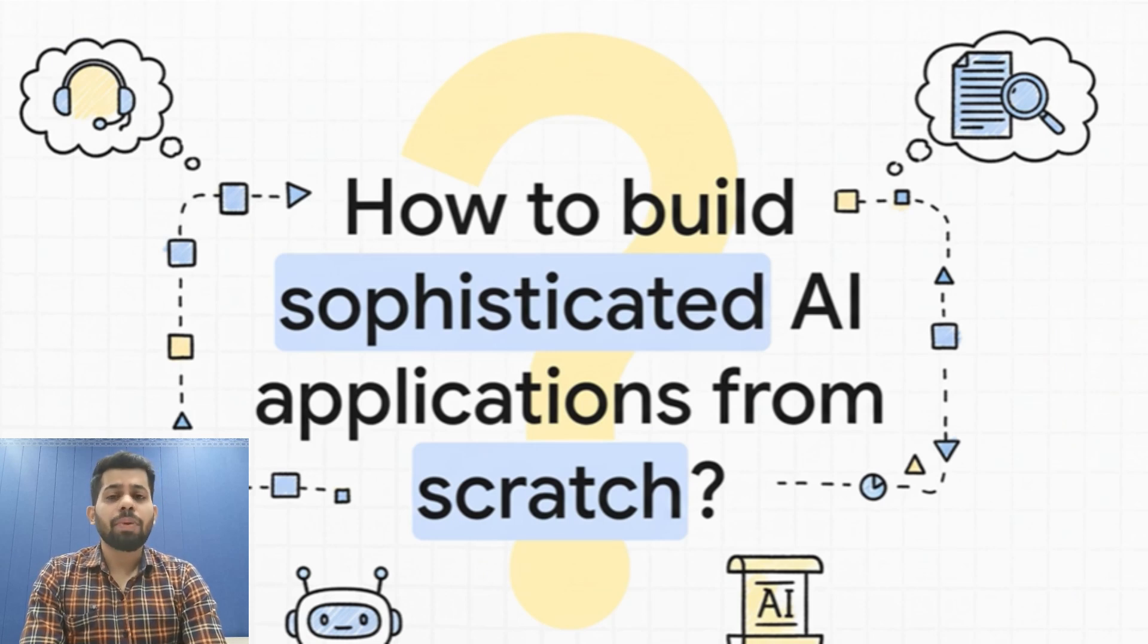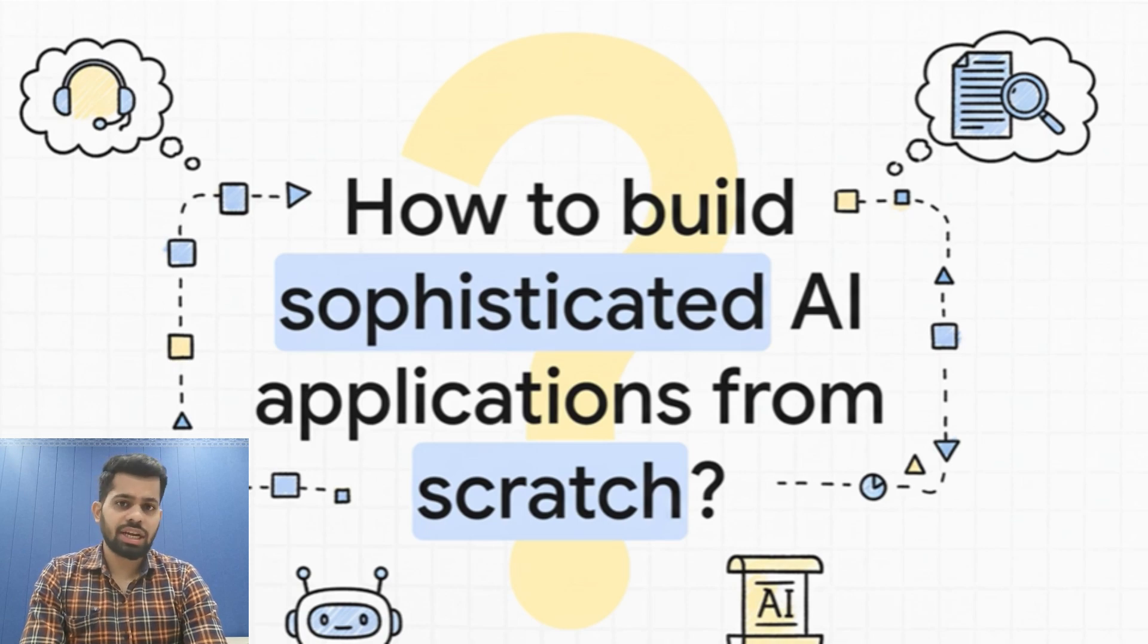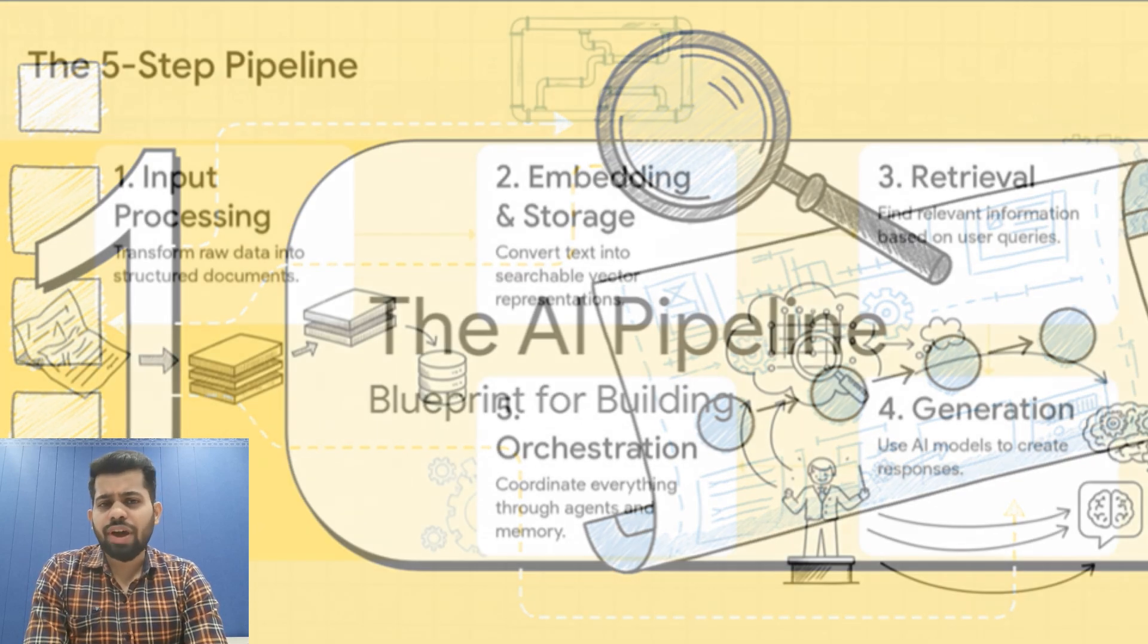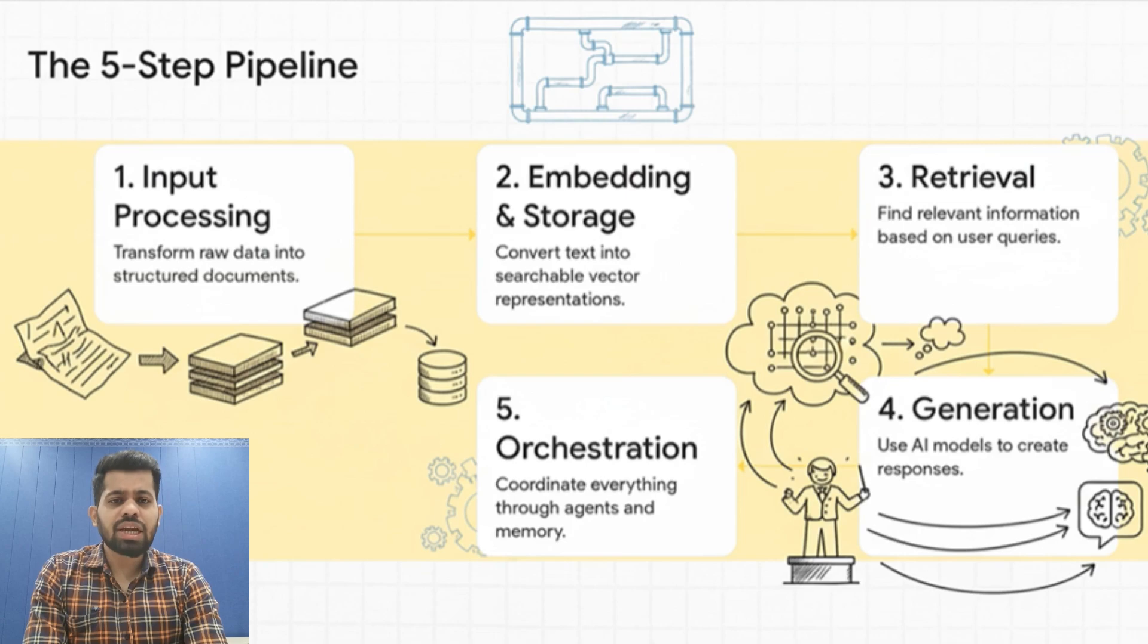LangChain is the industry standard for building production-ready LLM applications, and its power lies in how its major components are connected. It might seem complex at first, but it's actually very beautiful and organized into five major stages. Let's break it down step by step and component by component.